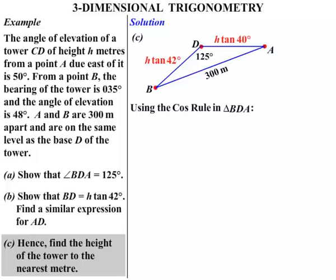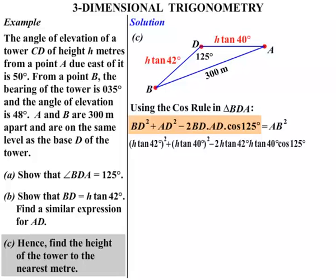So we're going to use the cosine rule. We're going to say that BD squared plus AD squared, minus two times the two sides BD and AD, multiplied by cos 125, well that will equal AB squared. So that's an application there of the cos rule. So when we substitute all the various values there, we come up with that fairly lengthy expression there. Where BD is H tan 42, AD is H tan 40. Now it equals AB squared which AB is 300, so we write equals 300 squared.